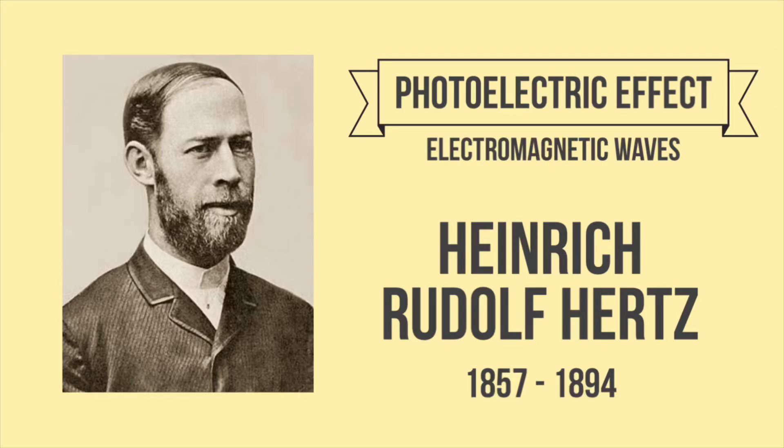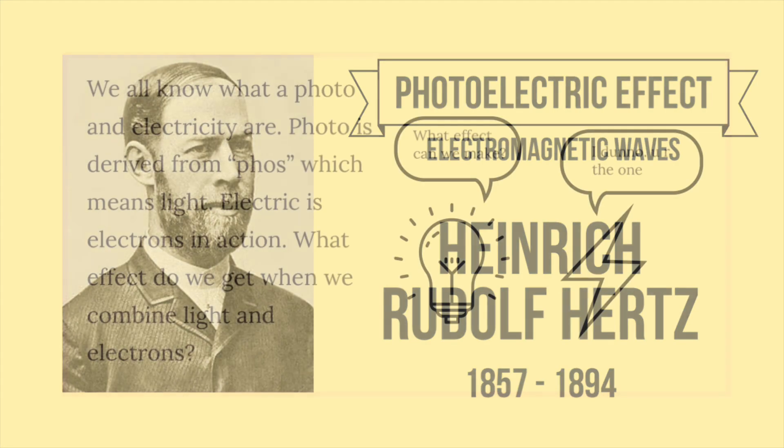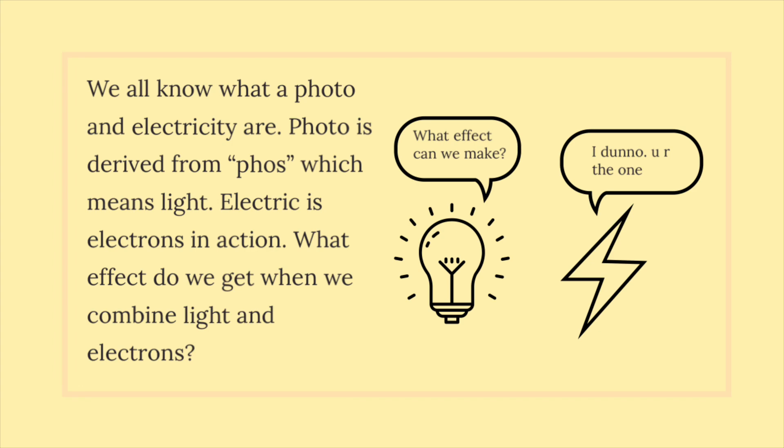Photoelectric effect, electromagnetic waves, Heinrich Rudolph Hertz, 1857 to 1894. We all know what photo and electricity are. Photo is derived from 'phos' which means light. Electric is electrons in action. What effect do we get when we combine light and electrons?